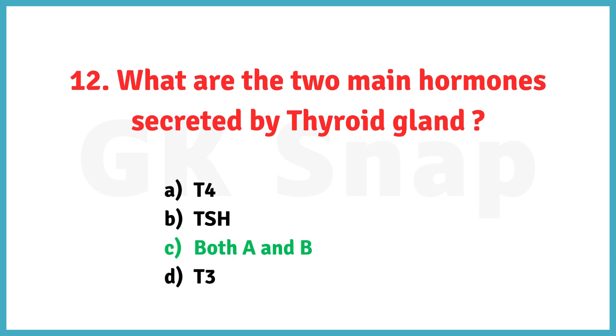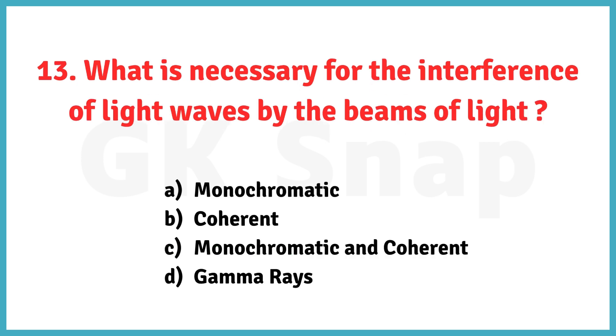What are the two main hormones secreted by the thyroid gland? The correct answer is option C, both A and B: T4 and TSH.